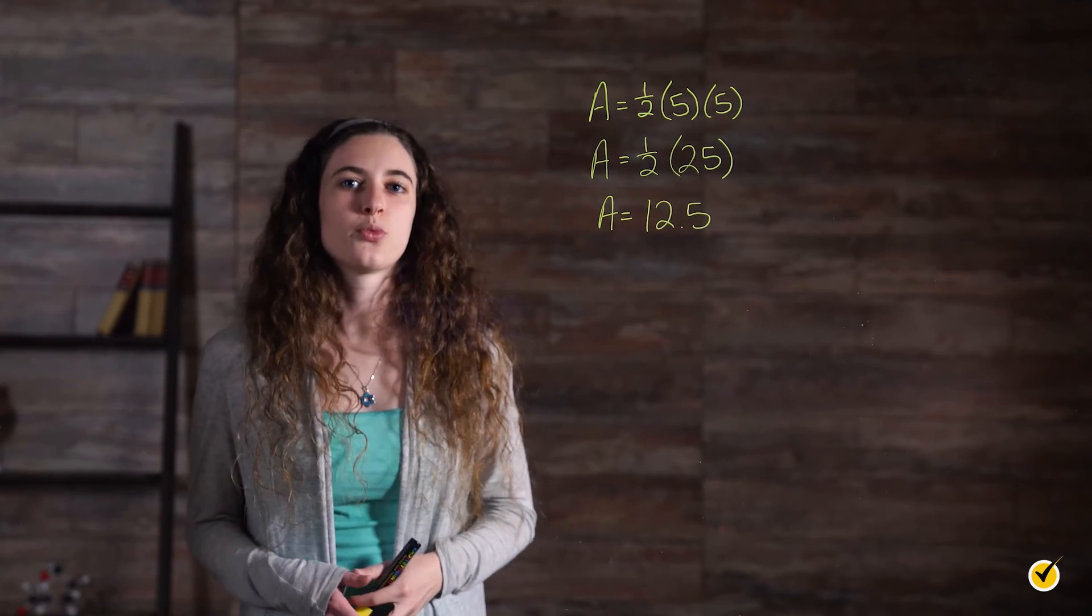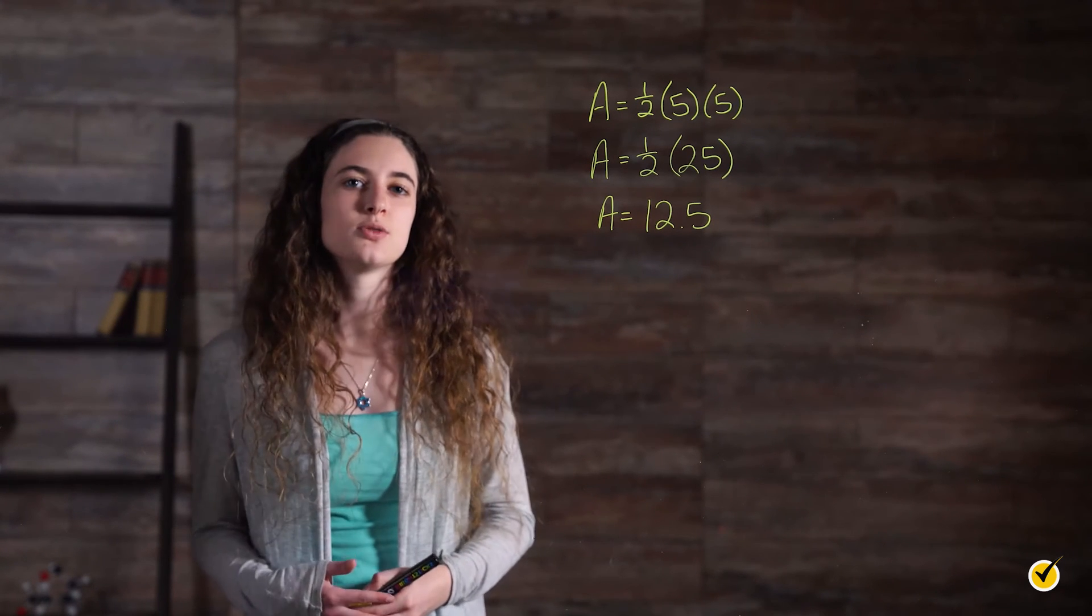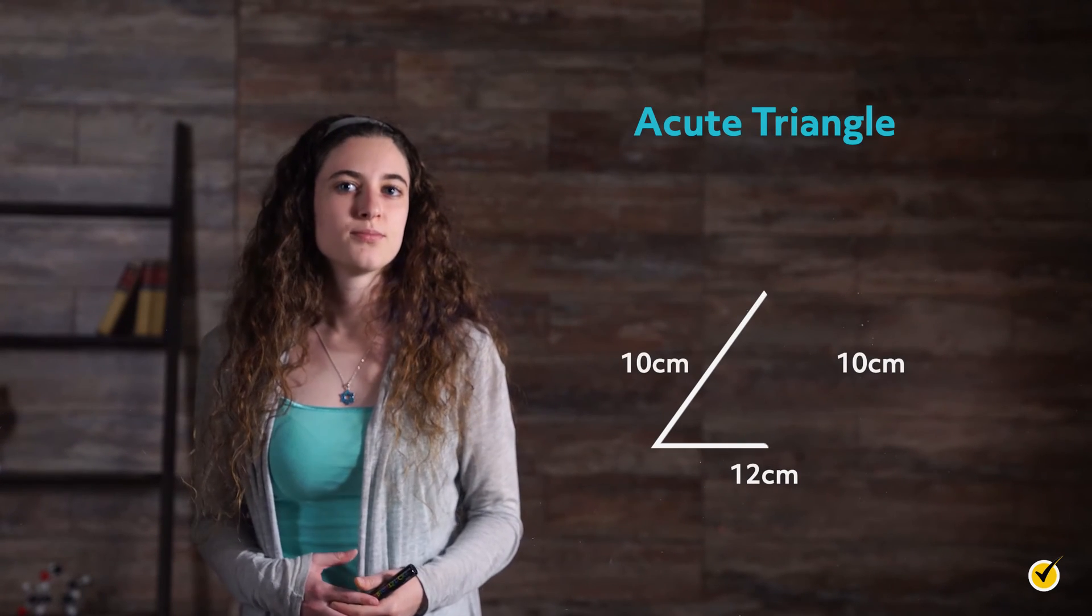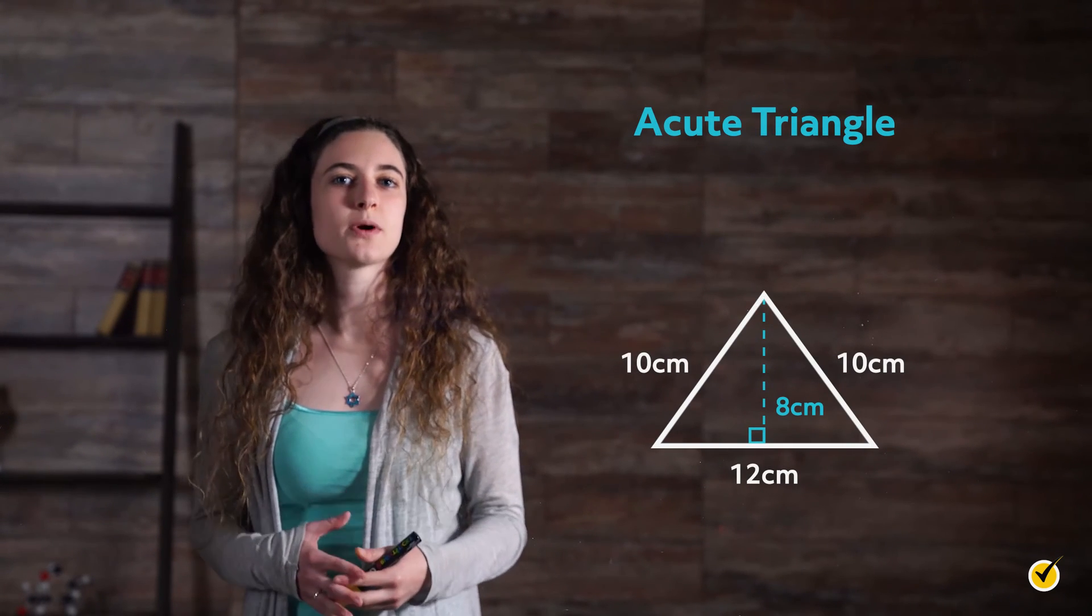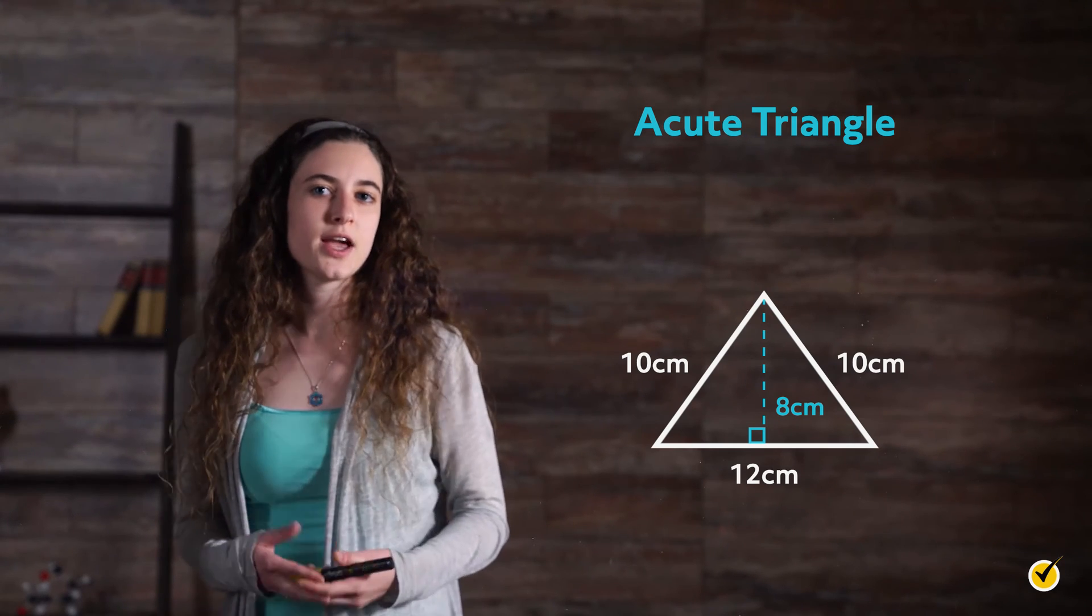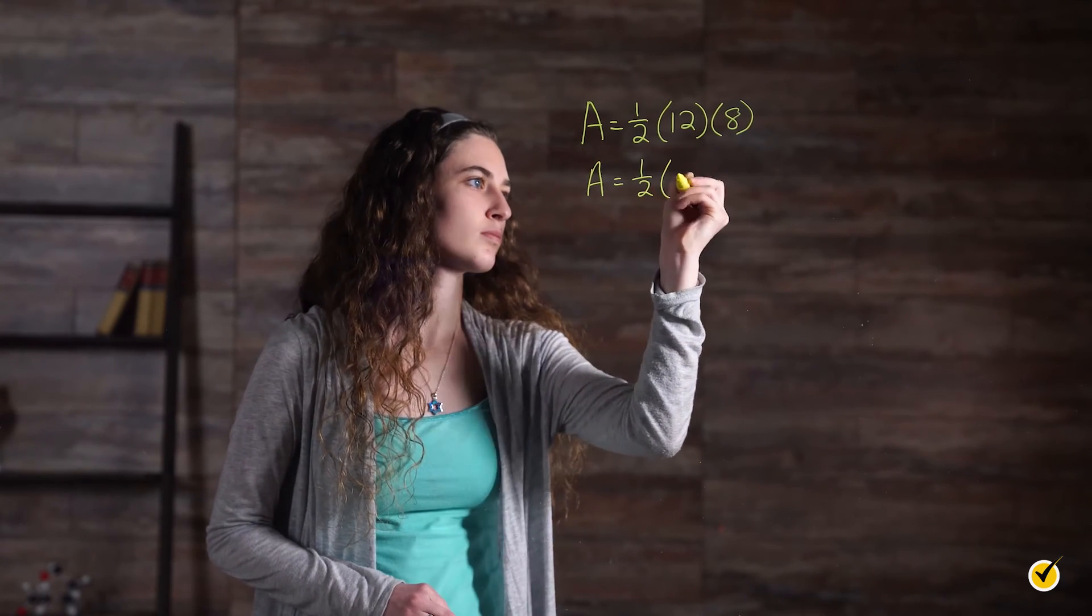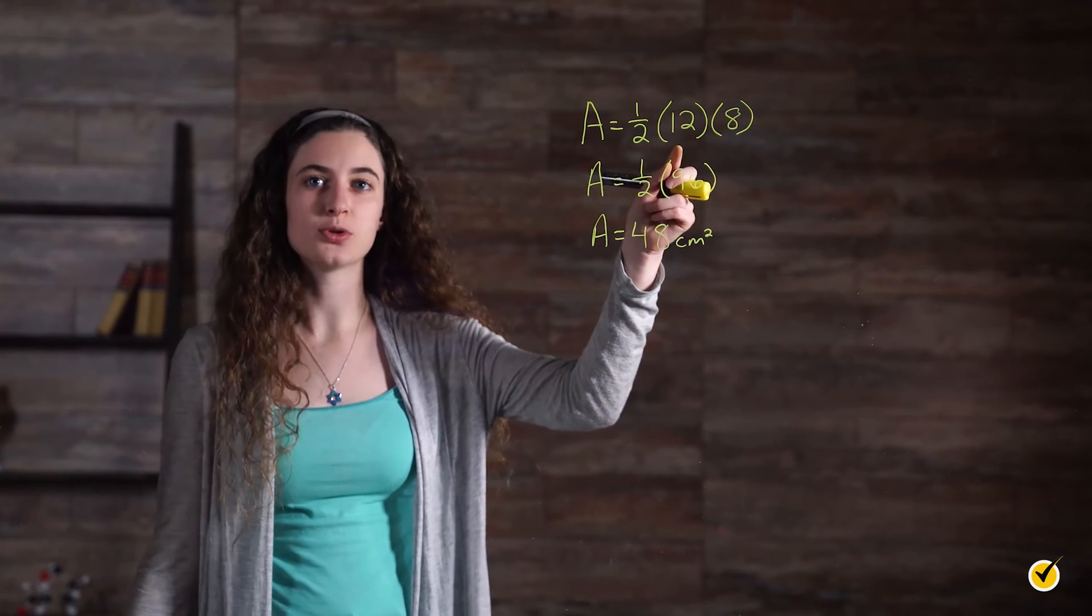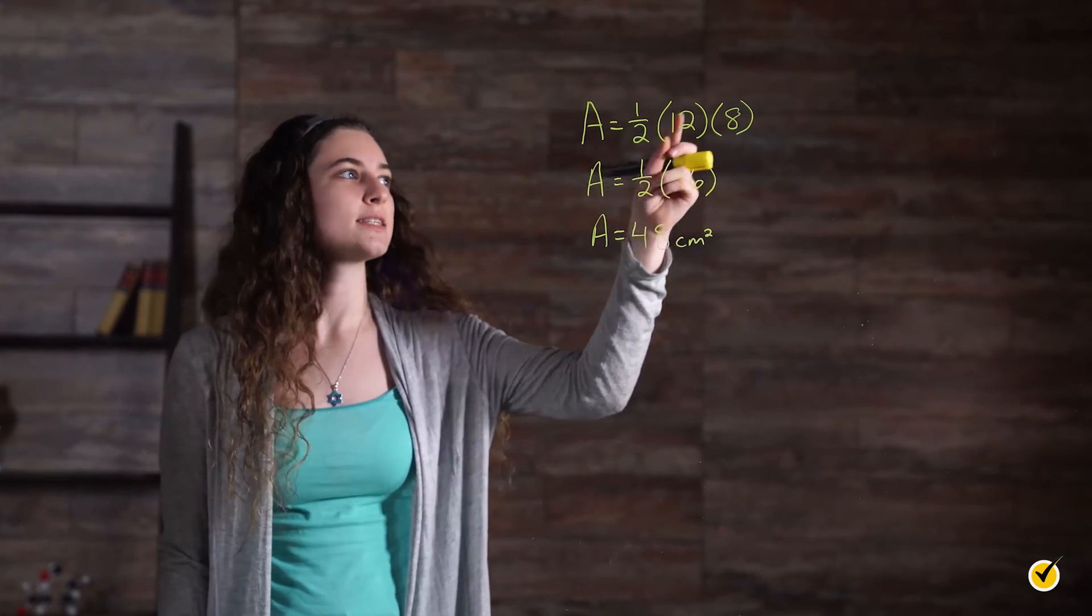Now we've seen the formula work and gained a better understanding of why the units are squared. All we have left to do is find the area of acute and obtuse triangles. Let's start with an acute triangle. Note that the height is always perpendicular to the base. From here, we can find the area. Here we have area equals 1 half times the base, which in this case is 12 centimeters, times the height, which is 8 centimeters. So we get 1 half times 96 from 12 times 8, which gives us 48 centimeters squared.